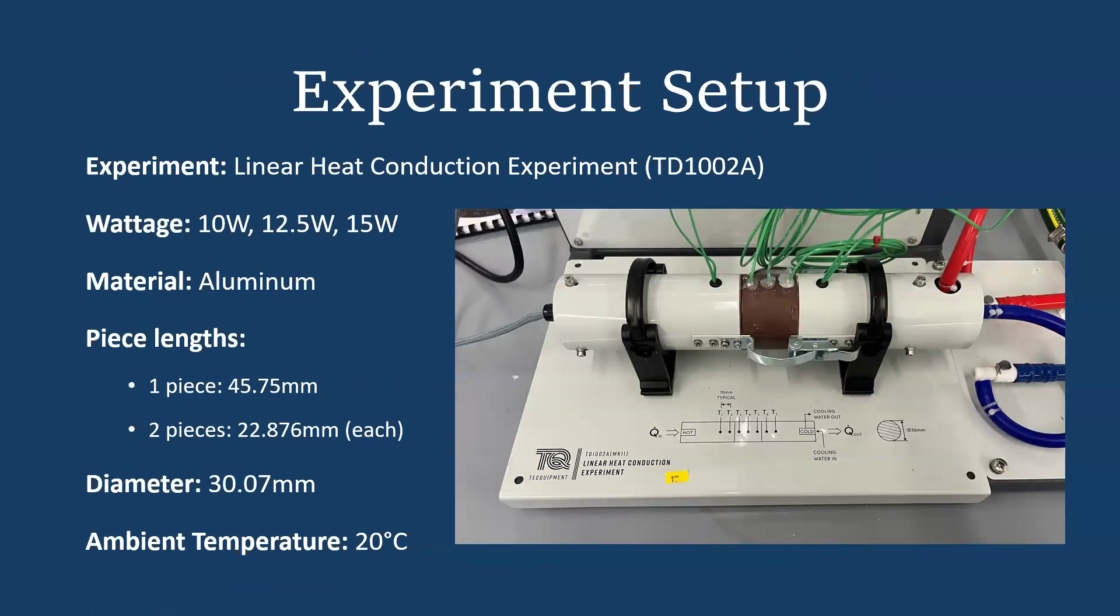To set up our experiment, we used a TD1002A machine, which can be seen in the picture. It also diagrams the experiment and the thermocouples here. We used powers of 10 watts, 12.5 watts, and 15 watts. The material we used was aluminum. For one piece, it was 45.75 millimeters in length, and for two pieces, it was 22.876 millimeters in length each. All of the diameters were 30.07 millimeters, and there was an ambient temperature of 20 degrees Celsius.